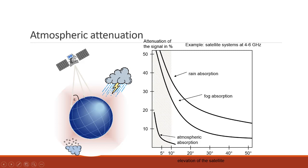This graph shows elevation angle versus signal attenuation measured as a time percentage. We can clearly see that rain absorption, fog absorption, and atmospheric absorption all cause the signal to attenuate, and this absorption changes with the elevation angle. So elevation angle has a very great impact upon atmospheric attenuation.